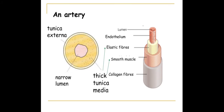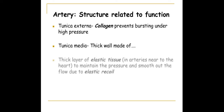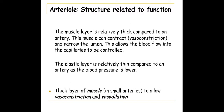We also have the tunica externa, which is made of collagen to give strength to the blood vessel because the blood is under very high pressure in the arteries. Arterioles are smaller than arteries and have a very similar composition, except they don't have as much elastic fibre.